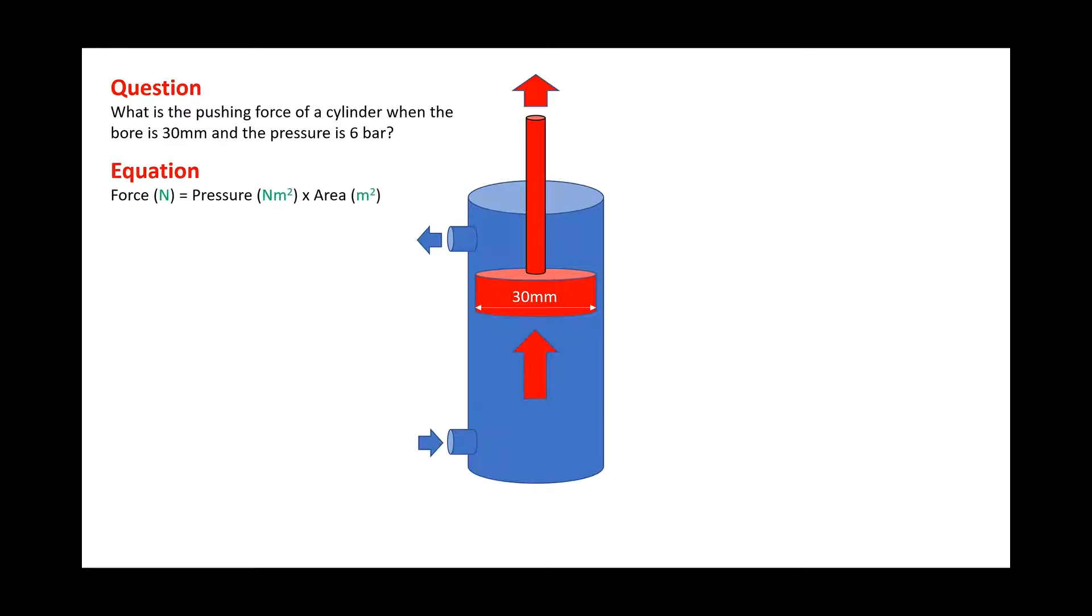So the equation we're going to use is force measured in newtons equals pressure measured in newton meters squared times area measured in meters squared. What we know from the question is the pressure is 6 bar, but for the equation we need to convert this 6 bar into newton meters squared.